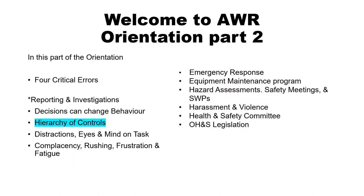In this part of the orientation, we will go over the four critical errors, reporting and investigations, decisions that can change behavior, hierarchy of controls, distractions, eyes and mind on task, complacency, rushing, frustration and fatigue, emergency response, equipment maintenance program, hazard assessments, safety meetings and safe work procedures, harassment and violence, health and safety committee, and occupational health and safety legislation.